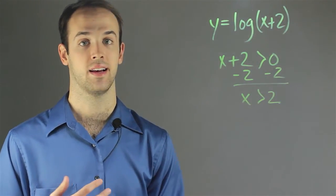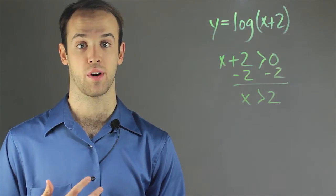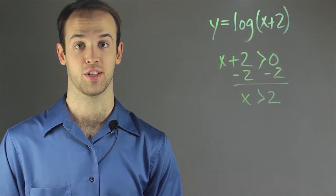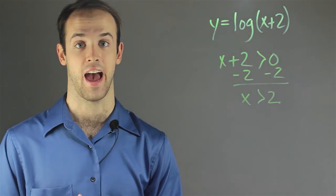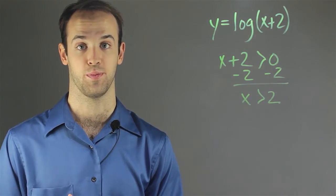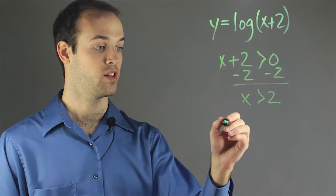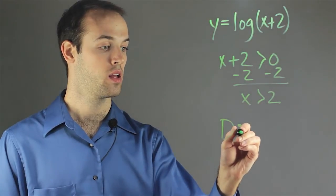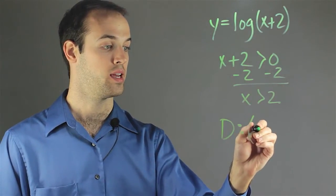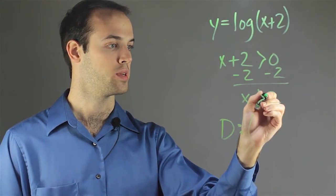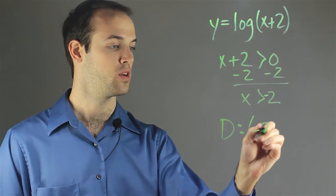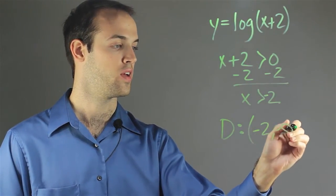So again, since we can't take the log of 0 or negative numbers, we know that a vertical asymptote on this graph must exist at x equals negative 2, which means that the domain is going to be negative 2 to infinity.